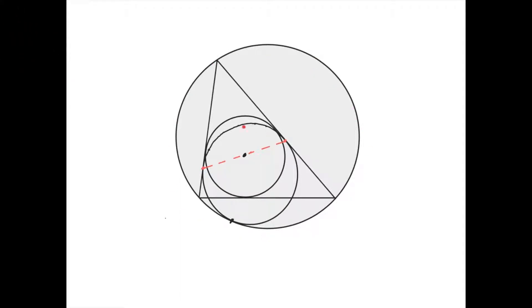In this case, this circle is the mixtilinear incircle of this triangle with respect to this vertex, because it is tangent to the circumcircle at this point, which is located on this arc.